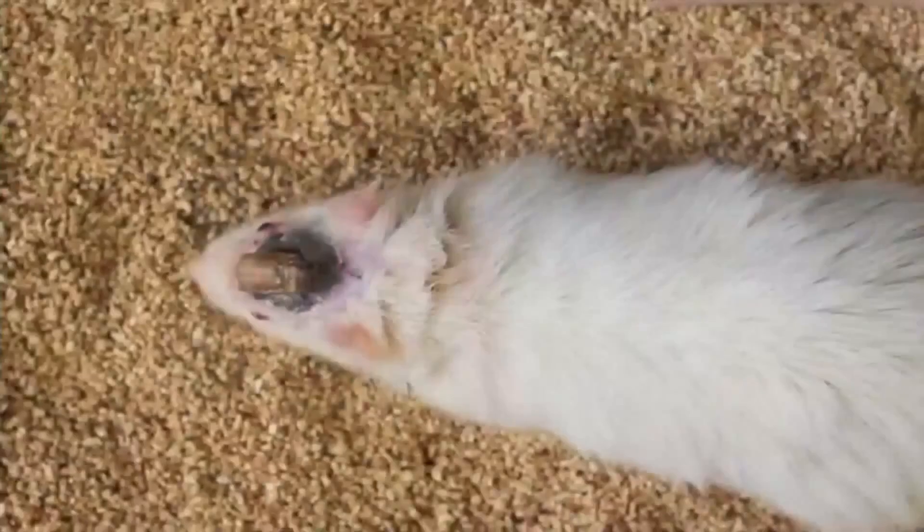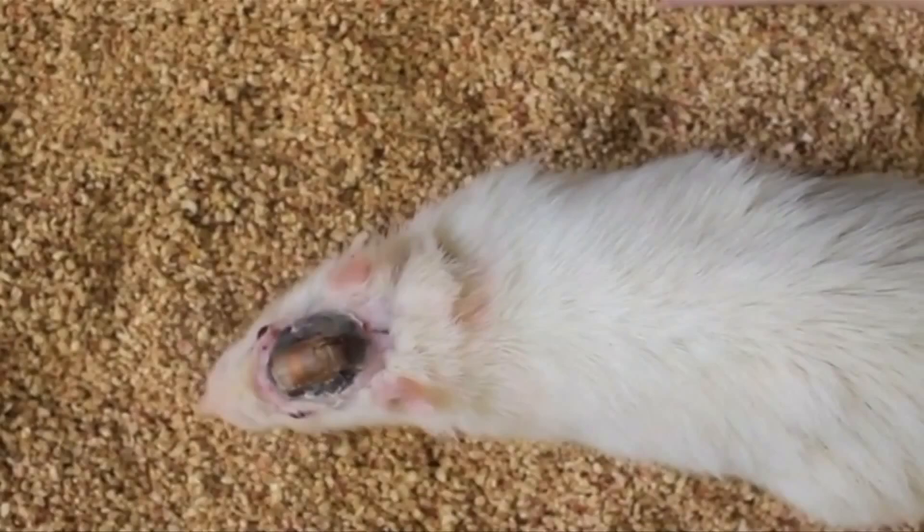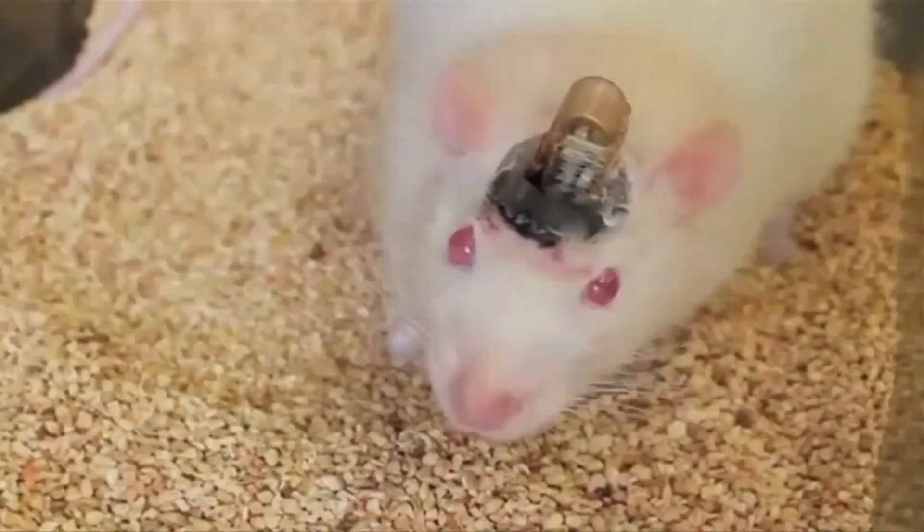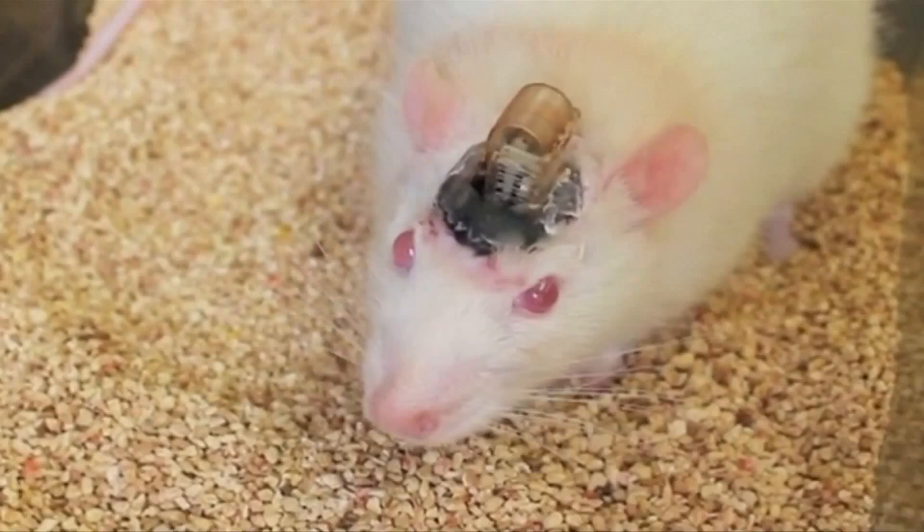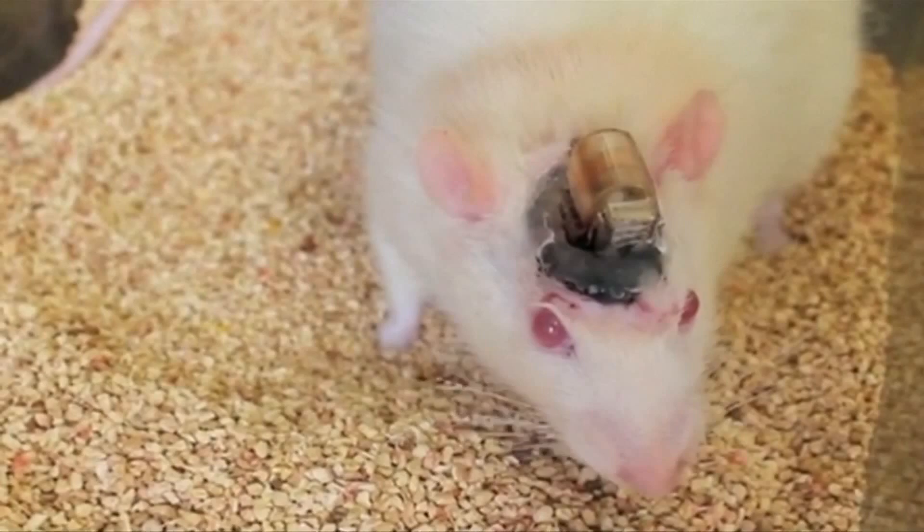The scientists say they were able to determine the path a mouse walked when they stimulated the brain in different ways. Their implant, they say, is less damaging to brain tissue than the metal tubes, or cannulas, scientists typically use to inject drugs.